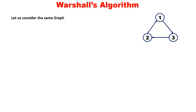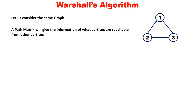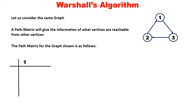Let us consider the same graph — three vertices and three edges. We shall find the path matrix. What is a path matrix? It will give the information of what vertices are reachable from what other vertices. I think you will understand with an example. We will find the path matrix for this graph.